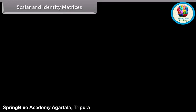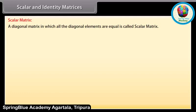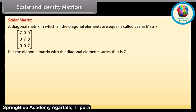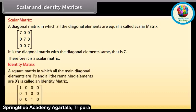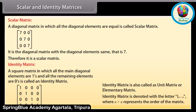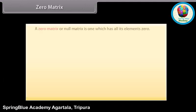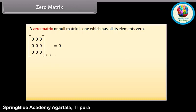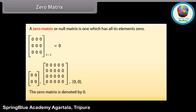Scalar matrix: a diagonal matrix in which all the diagonal elements are equal is called a scalar matrix. Look at this matrix — it is a diagonal matrix with all diagonal elements the same, that is, 7. Therefore, it is a scalar matrix. Identity matrix: a square matrix in which all the main diagonal elements are ones and all the remaining elements are zeros is called an identity matrix, also called a unit matrix or elementary matrix. It is denoted I(n×n). Zero matrix: a zero matrix or null matrix is one which has all its elements zero. The zero matrix is denoted by zero.